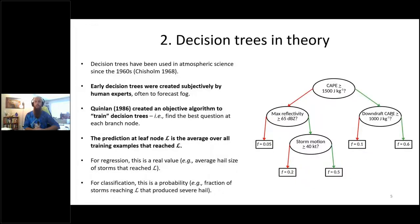Decision trees have a long history in atmospheric science — they've been used since the 1960s, with the first reference being Chisholm 1968. Early decision trees were created subjectively by human experts with no machine learning involved; a human expert created the tree based on their knowledge of the weather phenomenon. Back in 1986, Quinlan finally created an objective algorithm to train decision trees — that's when decision trees went from being expert systems to being machine learning.